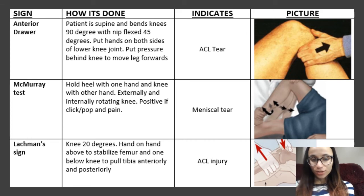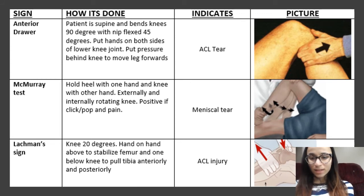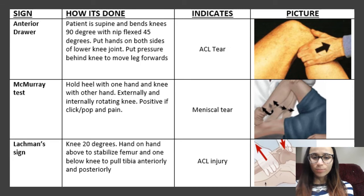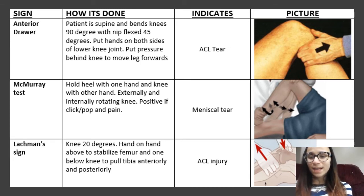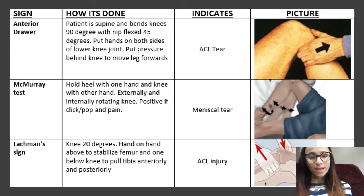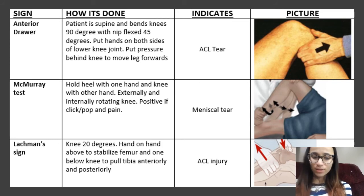Now we go on to the anterior drawer sign. You're going to place the patient supine — laying down — and bend the knees 90 degrees, with the hip flexed at 45 degrees, like in the picture. You're going to put your hands on both sides of the lower knee and put pressure behind the knee to move the leg forward, exactly like in the picture. This is going to indicate an ACL tear. The way to remember that is anterior drawer — A-A-ACL tear, anterior drawer.